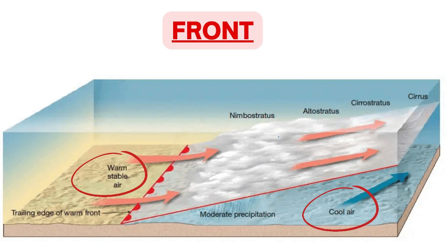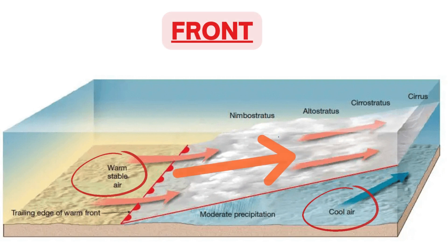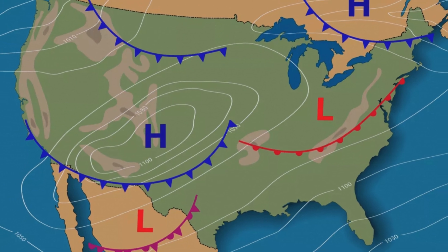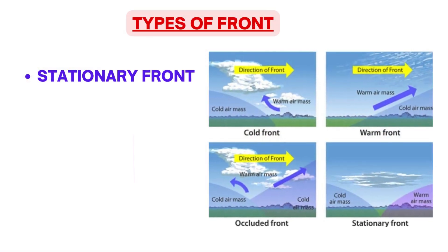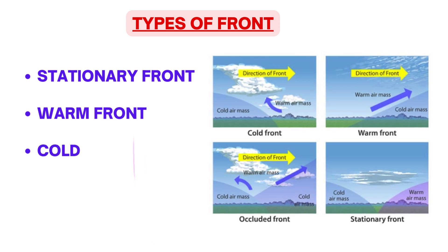Warm air is light and less dense; cold air is heavy and dense. So when two air masses meet, the warmer air will rise over the top of the colder because of difference in density. Fronts move across earth's surface over multiple days. The direction of movement is often guided by high winds such as jet streams. Landforms like mountains can also change the path of a front. There are four types of front: stationary front, warm front, cold front, and occluded front.